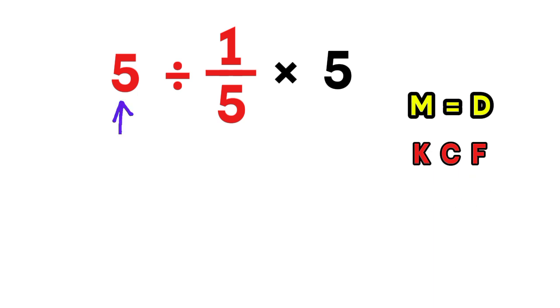So let's apply it carefully. We keep the first number. 5 stays 5. We change the division sign to multiplication. And we flip the fraction 1 over 5 into 5 over 1. Now, suddenly, the expression looks completely different. 5 times 5. That already feels much cleaner. Right? But we're not done yet.